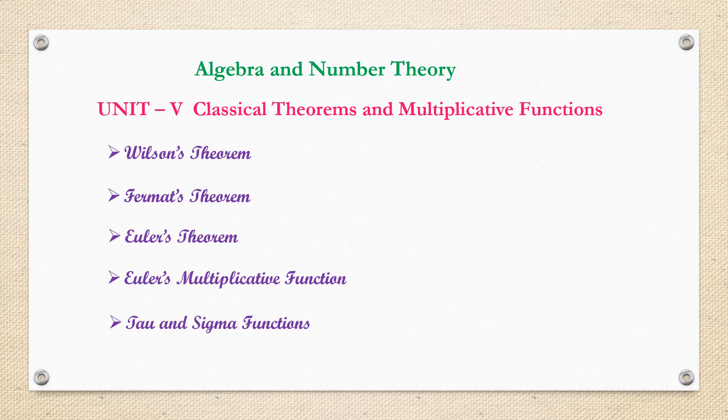After completing the respective theorems, we are going to discuss some important problems based on them — congruences. Using Wilson's, Fermat's, and Euler's theorems, we can find out remainders of higher powers. For any higher values, we can easily find out the remainder by using the proper theorem.